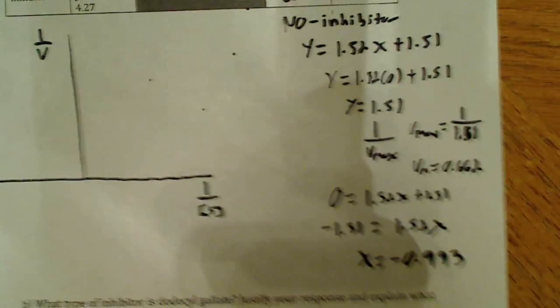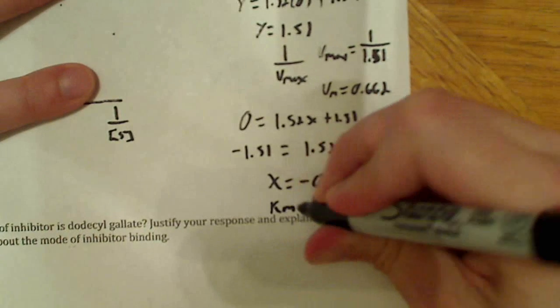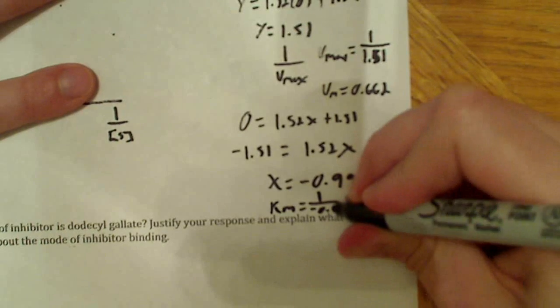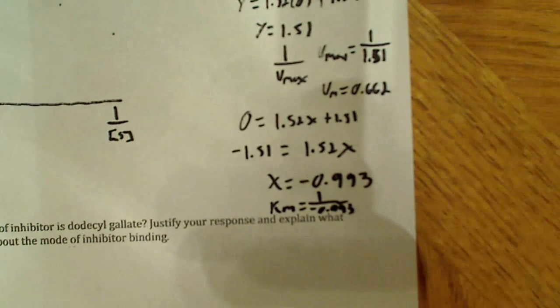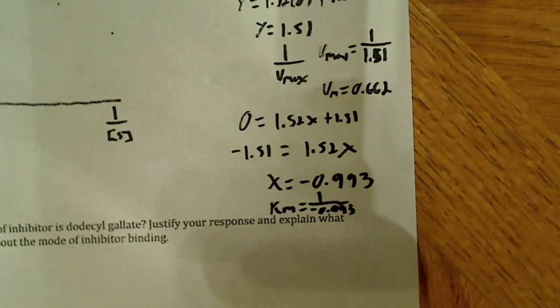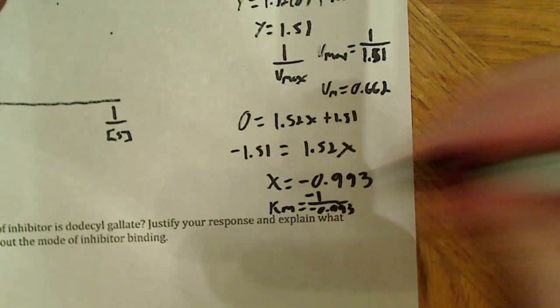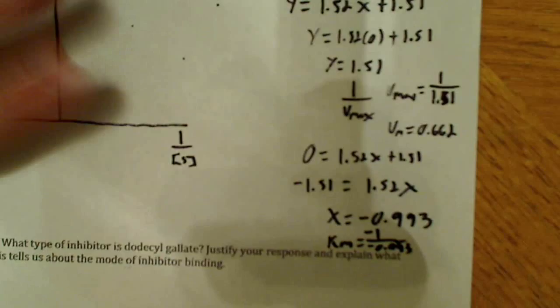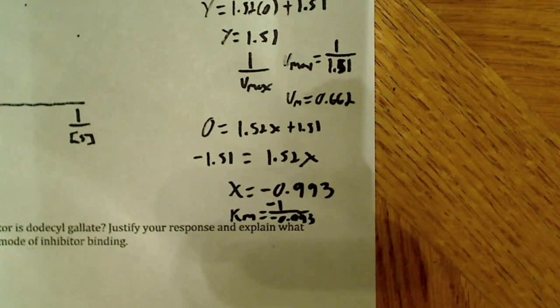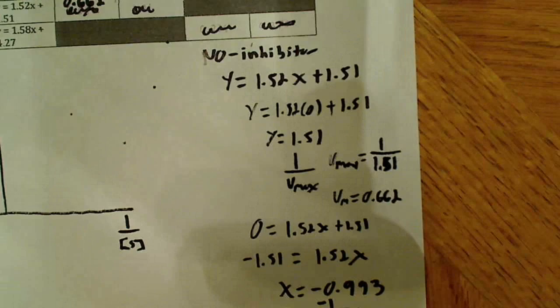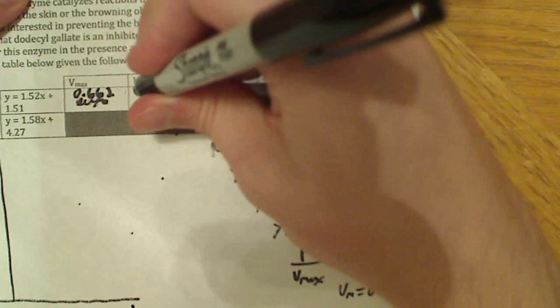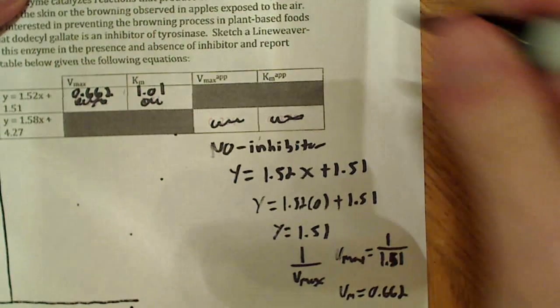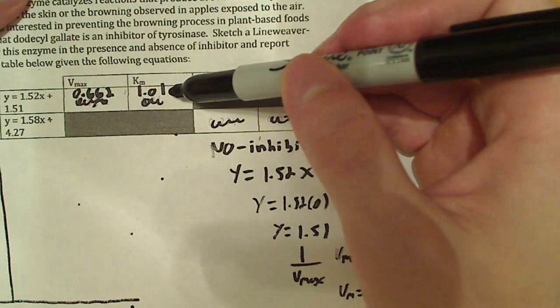It's a negative number, which is what we want because the KM is negative 1 over this value. So KM equals negative 1 divided by negative 0.993, which gives roughly 1.01. So the KM is 1.01. Now we have the Vmax and the KM for no inhibitor.